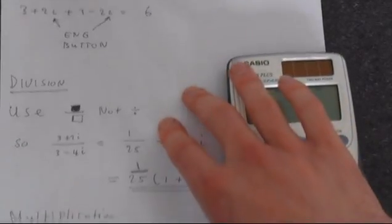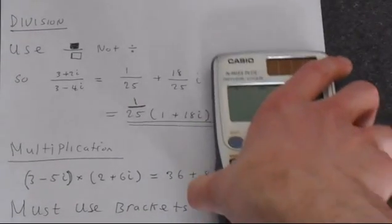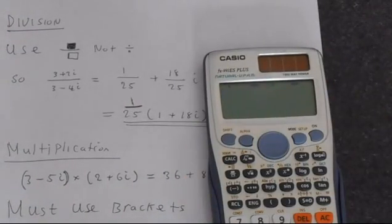Now let's look at multiplication. The key point here is that you must make sure that you use brackets. Otherwise, you will get the wrong answer. When you're doing the multiplication, use brackets around your complex numbers.